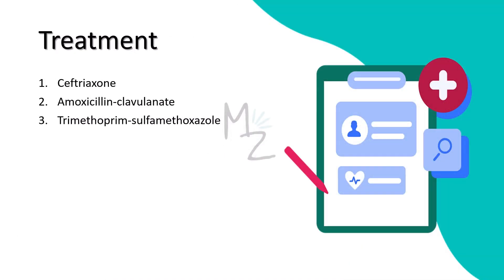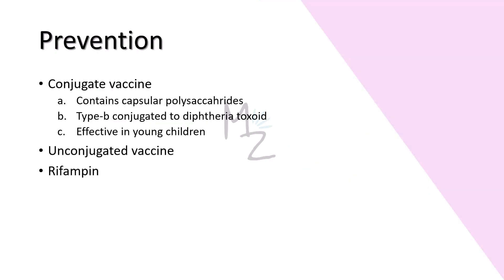Treatment: The treatment of choice for meningitis or other serious systemic infections caused by Haemophilus influenzae is ceftriaxone. Upper respiratory tract infections like otitis media and sinusitis are treated with either amoxicillin-clavulanate or trimethoprim-sulfamethoxazole. We can also use rifampin but for prophylaxis purposes. For prevention, the type B conjugated vaccine — conjugated to diphtheria toxoid or other carrier proteins — is given between the ages of 2 and 15 months. This vaccine is much more effective in young children than the unconjugated vaccine and has reduced the incidence of meningitis. The unconjugated vaccine is also used to prevent infections caused by Haemophilus influenzae.